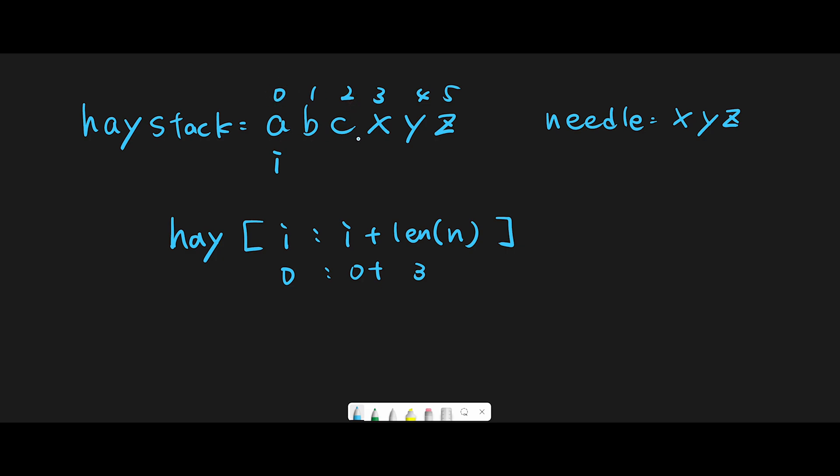So first we check from 0 to 2, which is 'abc', but the needle is 'xyz'. So in this case we can't start from index 0, so move next.